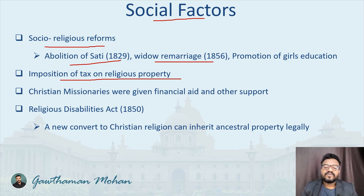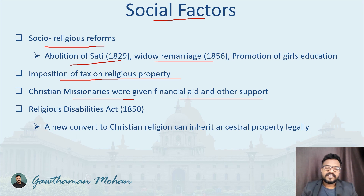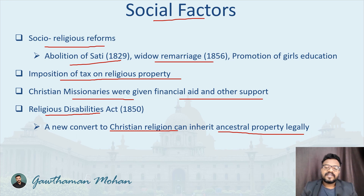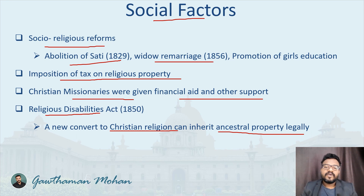The second social factor was the imposition of tax on religious property. Christian missionaries were also given financial aid and other support by the British administration. They also introduced the Religious Disabilities Act. During this time, due to social evils like the caste system, many people converted to Christianity. Under this act, a new convert to Christianity could legally inherit ancestral property, which was a problem for people following traditional beliefs. People started protesting against these kinds of policies of the British administration.